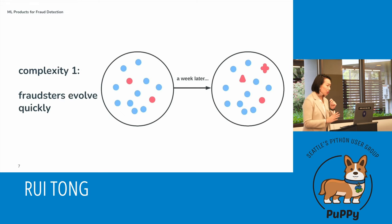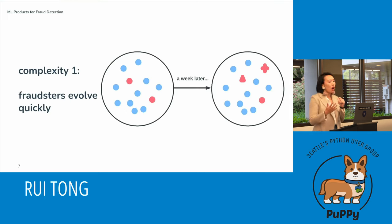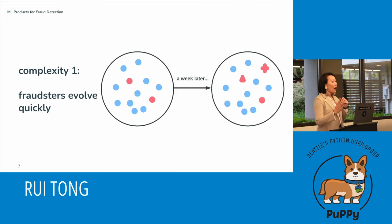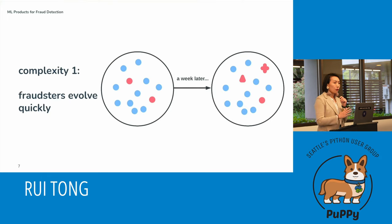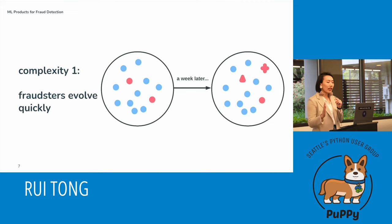Complexity number one: fraudsters evolve super quickly. For any ML solution, test data doesn't reflect all the possible cases that could happen in the real world because the world is fundamentally changing and shifting all the time. This is a particularly frustrating problem in fraud detection because it is fraudsters' jobs to constantly find loopholes in your model or system. Maybe a week ago, a fraudulent transaction might look like the red dot on the graph, but a week later those fraudulent transactions quickly morph into something else that you don't know how to capture.